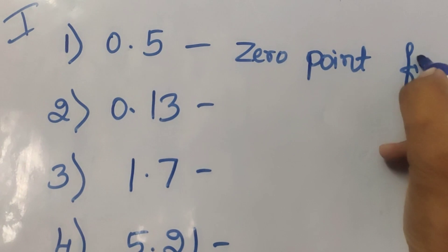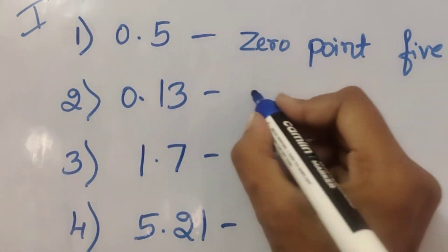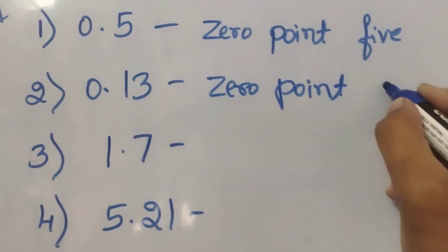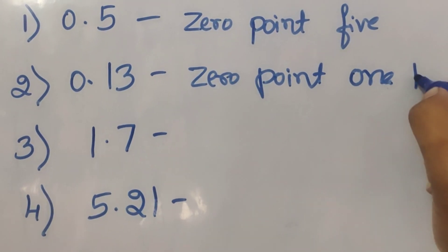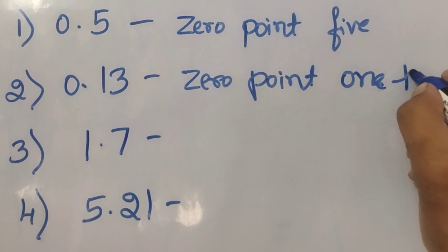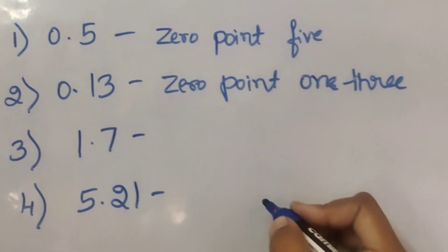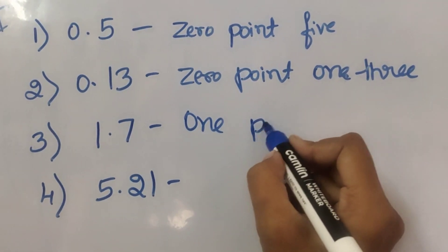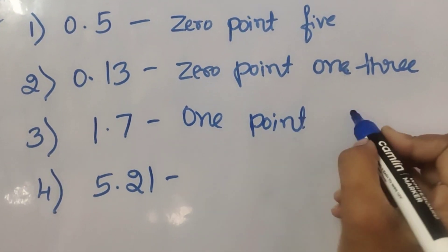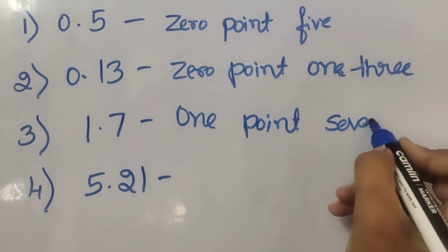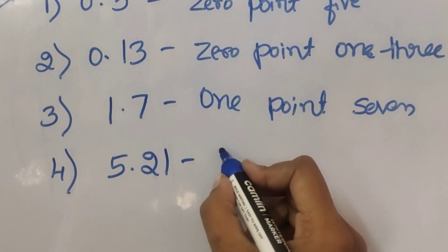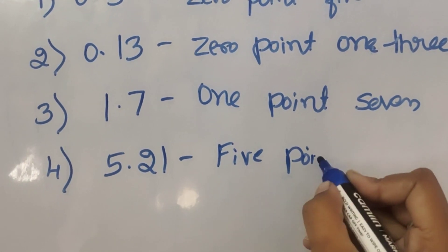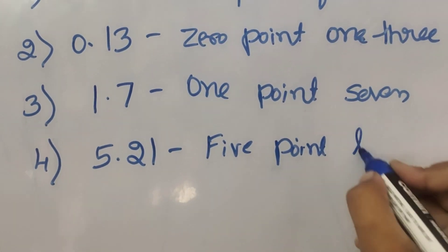Second one is 0.13. Write 0.13 in words — note the point and the unit place. Third one: 1.7. Fourth one: 5.21 — write this as five point twenty-one.